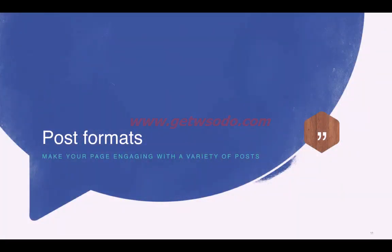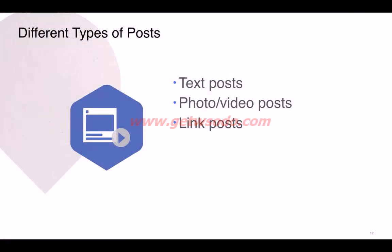The next topic is the various post formats. Facebook allows us to create different types of posts to make our page more engaging. Typically there are three types: a text post — which is a post with only text, no attached media or link; a photo or video post, also called a media post — which includes photos, videos, or GIFs; and a link post — a post where you include an external link that redirects people away from Facebook.